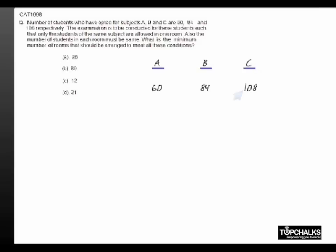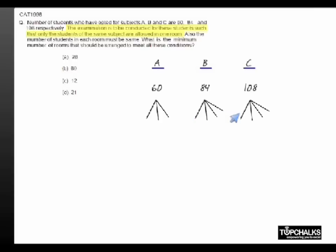The examination is to be conducted for these students, and students of the same subject are allowed in one room. This means we must split these people into a certain number of rooms and make all people belonging to A sit in the same room, B sit in the same room, and so on.